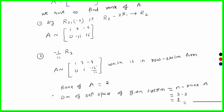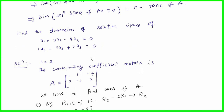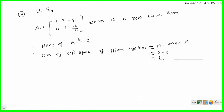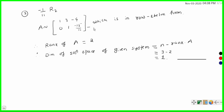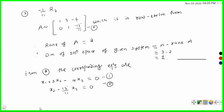So the solution space of this system of linear equations has dimension 1 — that is, the solution space is generated by a single vector. Let us check this by calculating the actual solution space. From the row echelon form, using back substitution: from equation 2, x2 = (15/11)x3, and x3 is a free variable, so let x3 = t where t belongs to R.